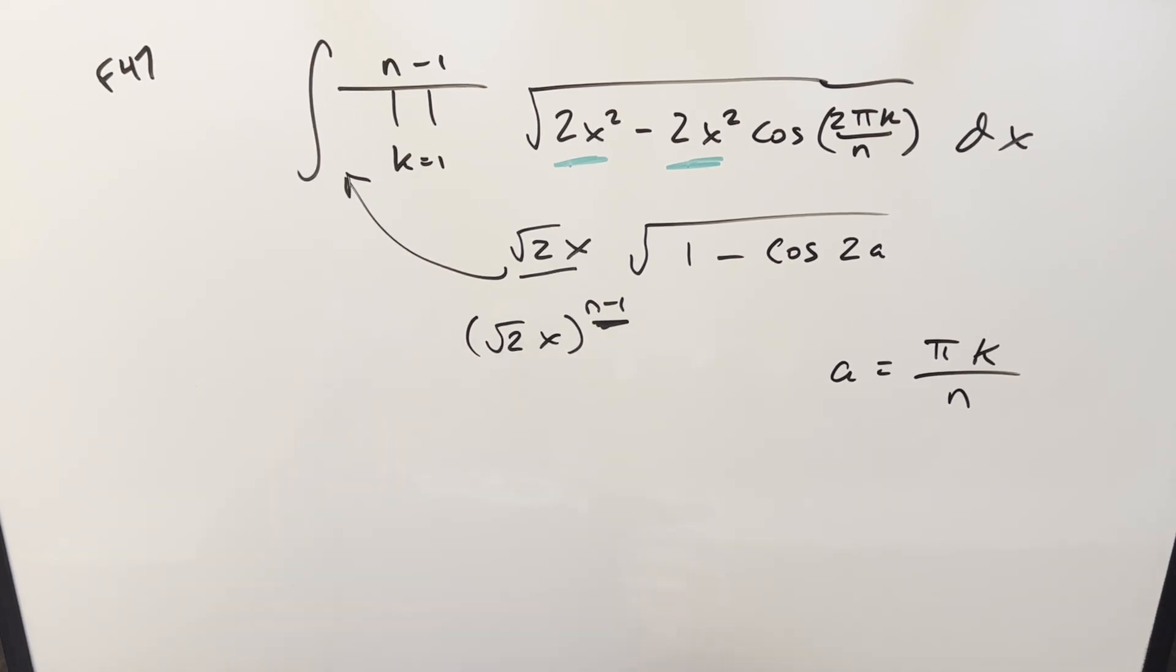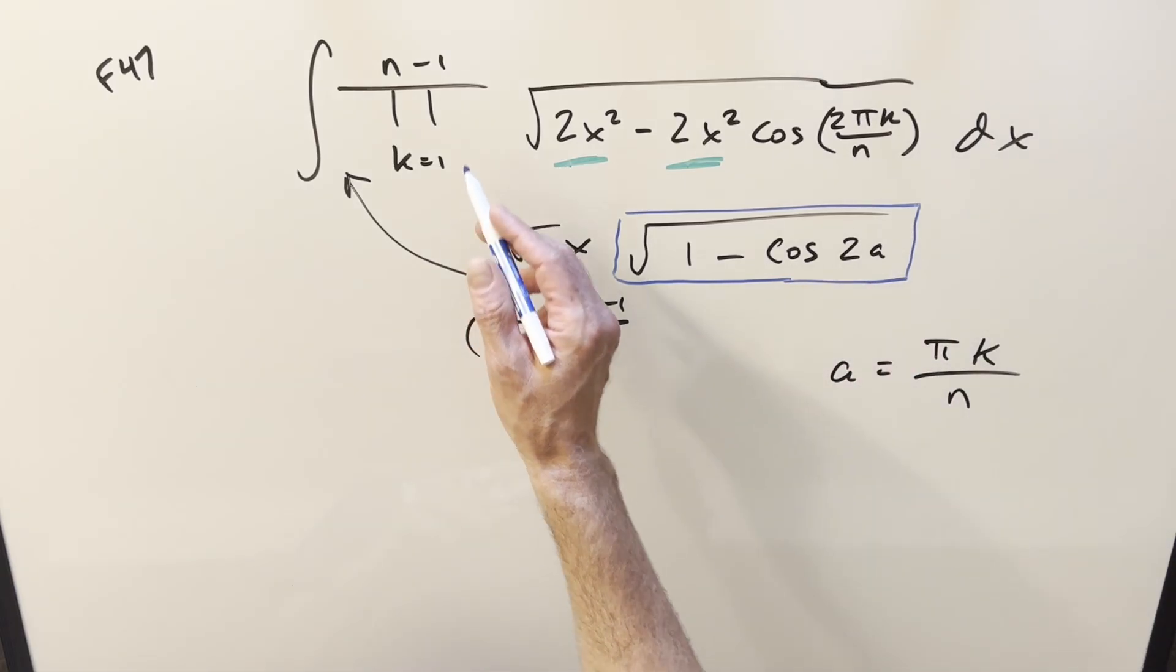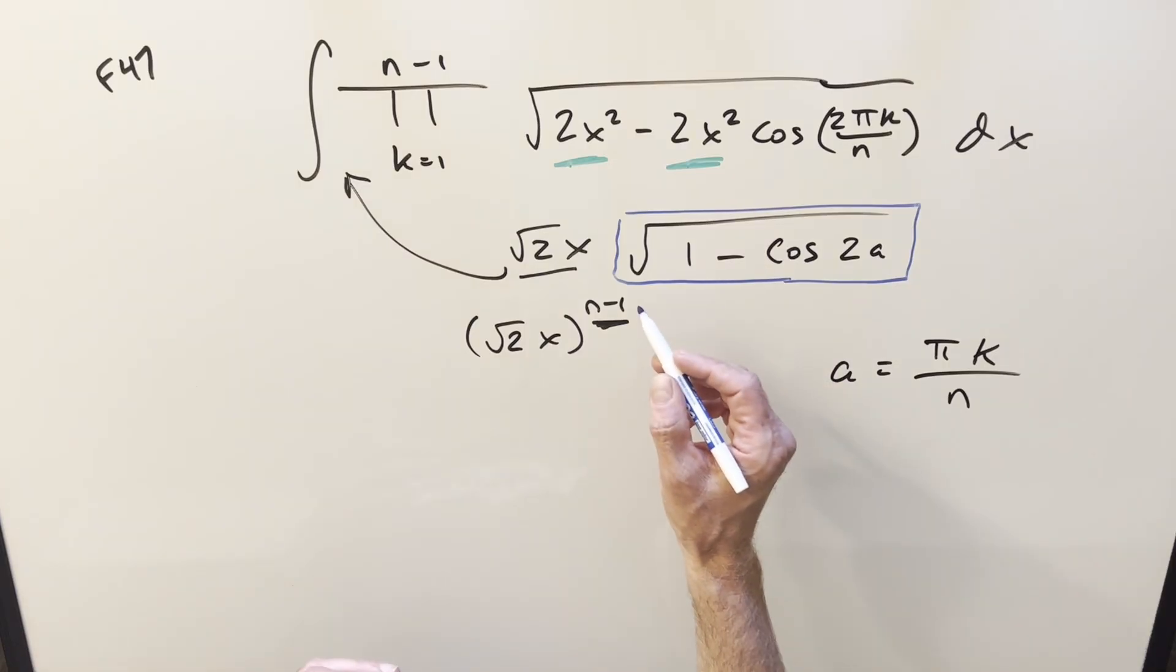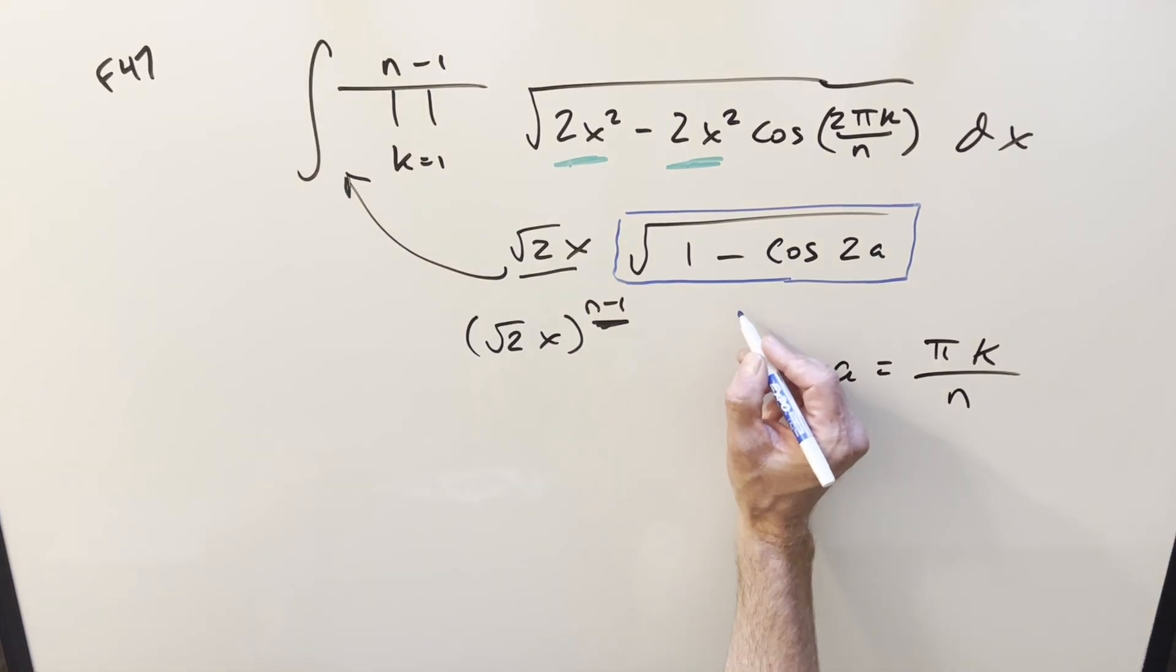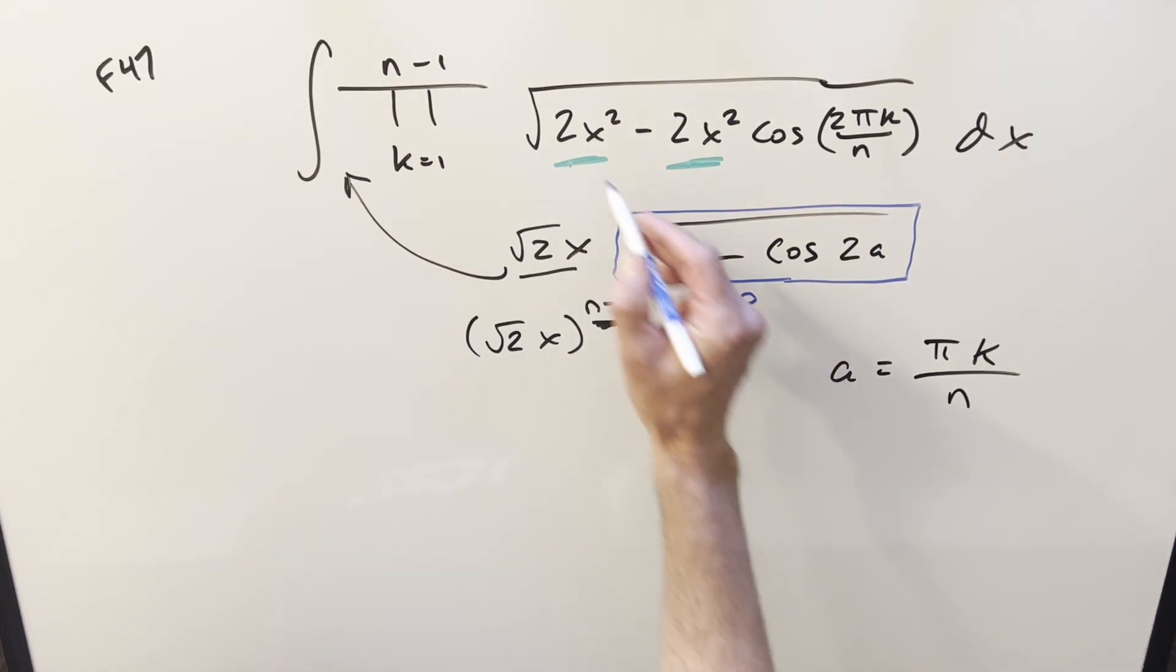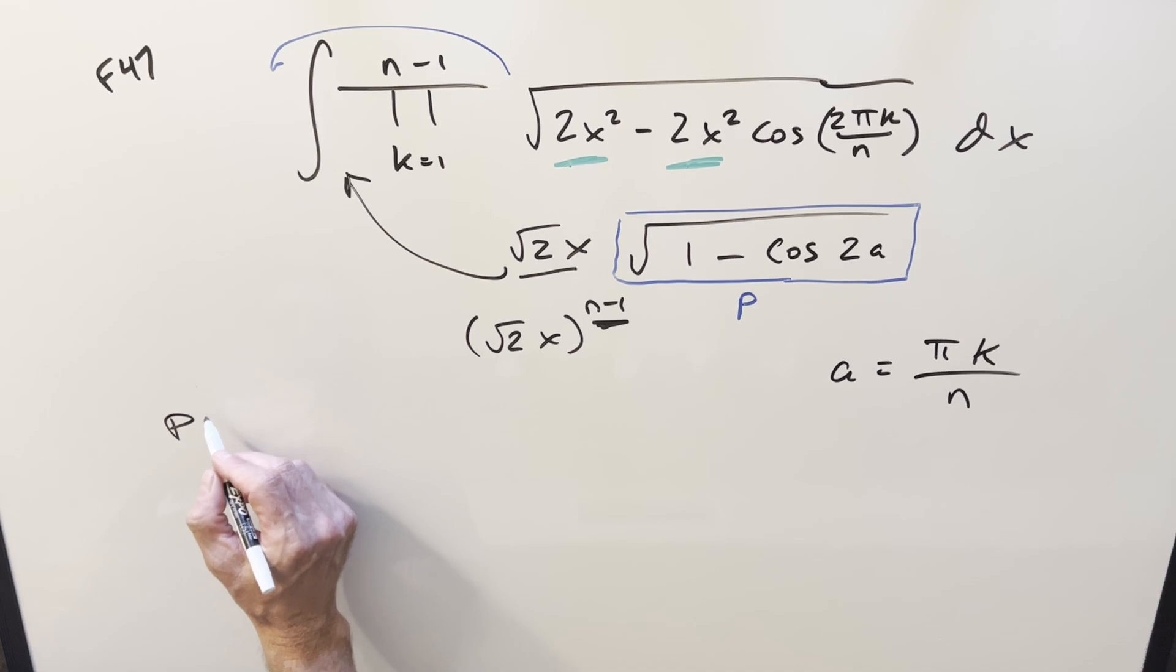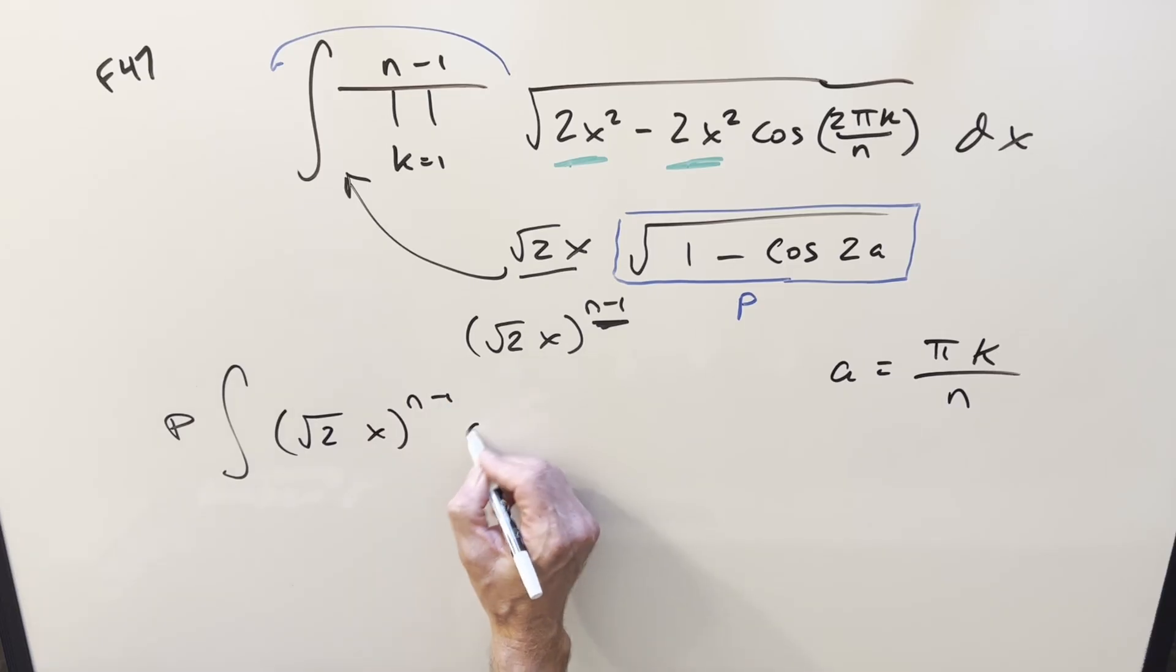But breaking it up that way, notice now the whole product, inside the product, all we're going to have is this thing, and this has no x in it. So the whole product can be considered a constant term. What I can do is call what's left of the product p, and then bring it outside of the integral. So we're going to have this product p out front of the integral, and so then we're just integrating this square root of 2x to the n minus 1 dx.